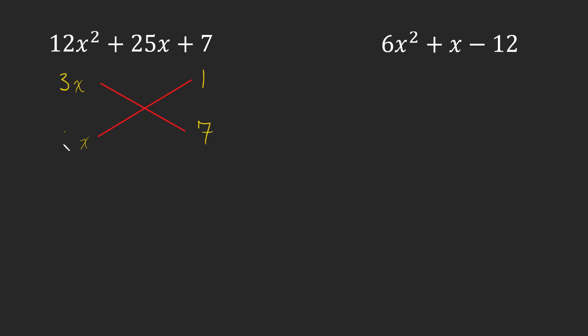Now 1 and 7 are the only factors of 7, so we only have to deal with the 12. Let's try 3x and 4x. If I cross multiply or do this multiplication here, I'm going to end up with 21x because of the 3x times 7, and I'm going to end up with 4x because of the 4x times 1. And 21x and 4x, they're going to add to 25x. So what we have here is we have our answers: 3x plus 1 and 4x plus 7. How did I know they were plus? Well, because both terms here are positive, so I need to multiply to positive 7 and I need to add to positive 25.